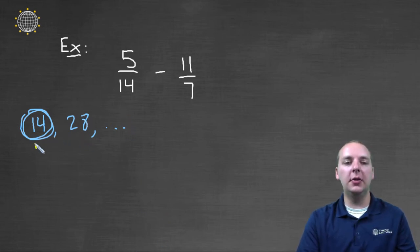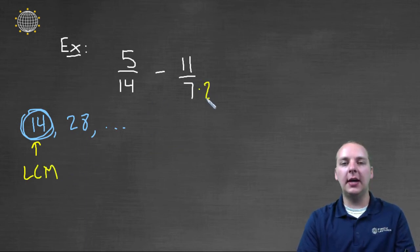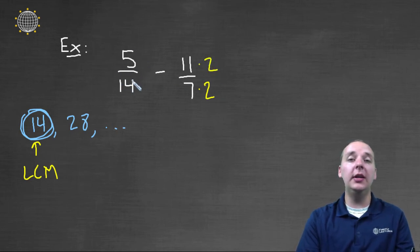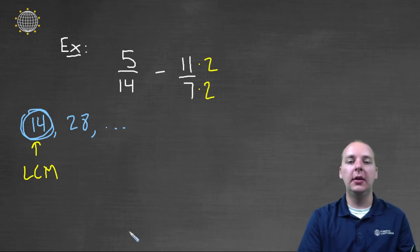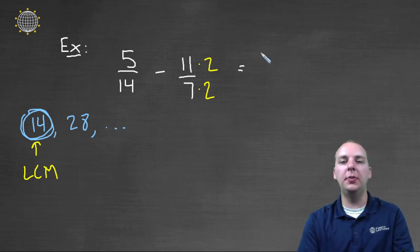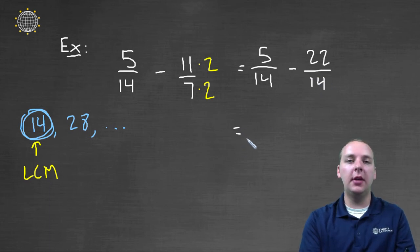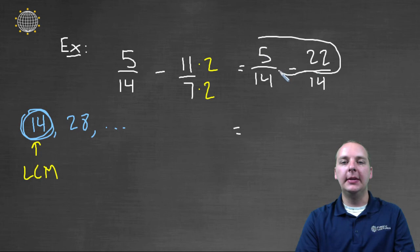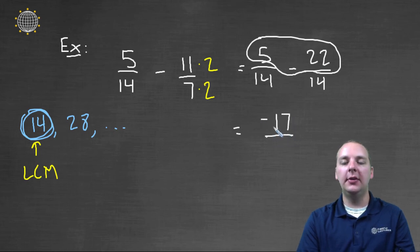So fourteen is going to be my least common multiple of these two denominators. So I'll take seven times two to get fourteen, and I'll also need to take eleven times two. I don't have to do anything with the first fraction because it already has a denominator of fourteen. So this would be the same as five over fourteen minus twenty-two over fourteen. I have a common denominator now, so I can proceed with the algebra. Let's see, the arithmetic happens in the numerator. Five minus twenty-two is negative seventeen divided by the common denominator of fourteen, and we're finished.